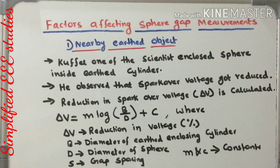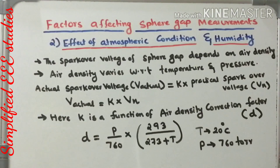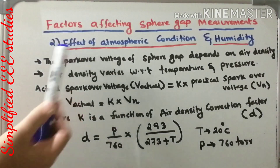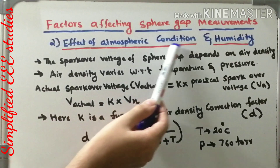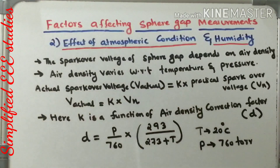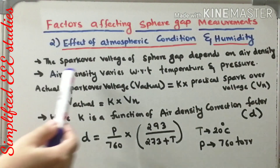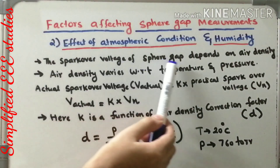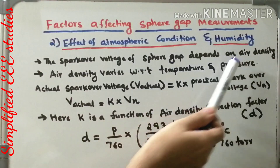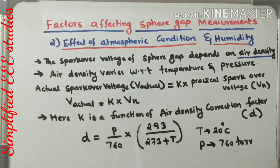We can conclude that if there is any nearby Earth Object, the overall spark over voltage gets reduced. Now let's discuss the second factor — the effect of atmospheric condition and humidity. The spark over voltage of Sphere Gap depends on air density.